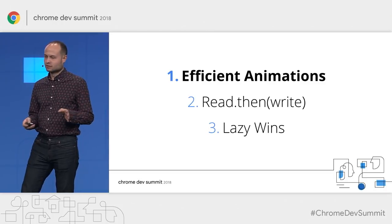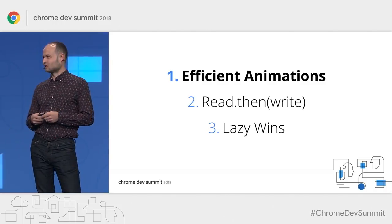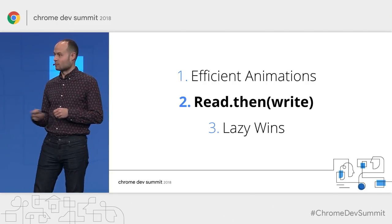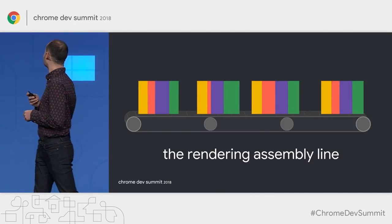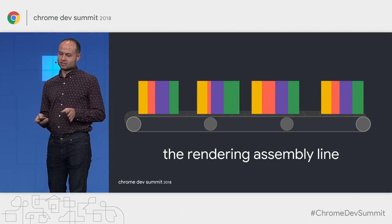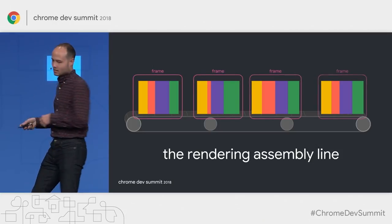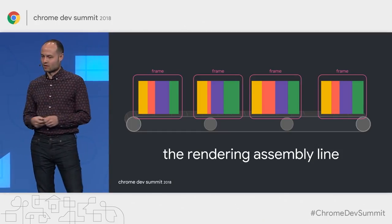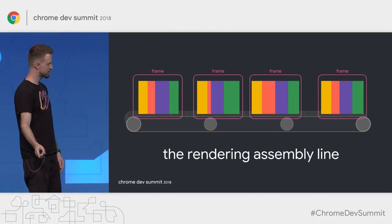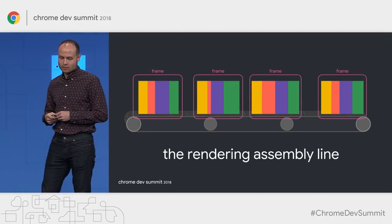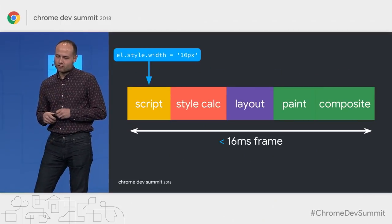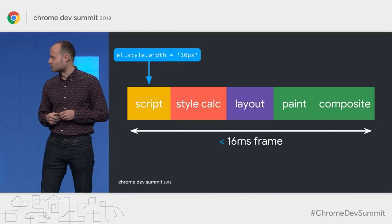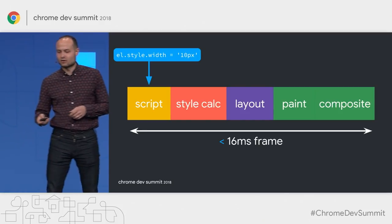We talked about efficient animations, but there's another whole aspect of rendering that's really important if you want to hit 60 frames per second: the idea of reading and then writing. To understand this, we need to take a trip down to the rendering assembly line. When we look at an app in the performance tab of DevTools, we see little chunks of the sequence — those are the frames. In an ideal situation, there's a lot of white space in between, meaning your app is main thread jank-free. We have style recalculation, layout, paint, and compositing. We didn't really dig into the script portion that leads off this whole thing — as it turns out, it's really important. Not all scripts are created equal.